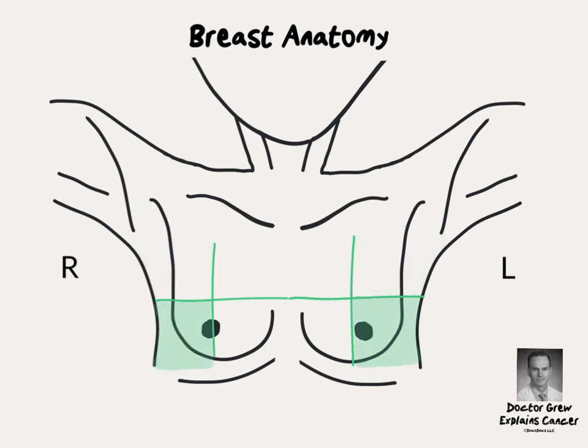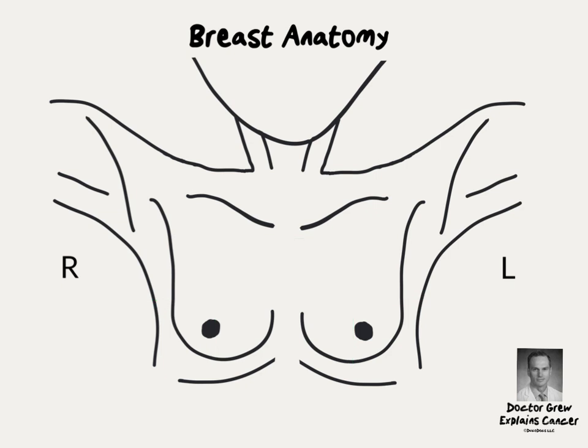Each breast is divided into four quadrants: upper outer, lower outer, lower inner, and upper inner quadrant. Ultrasound reports locate abnormalities based on where they would fall on the face of a clock.